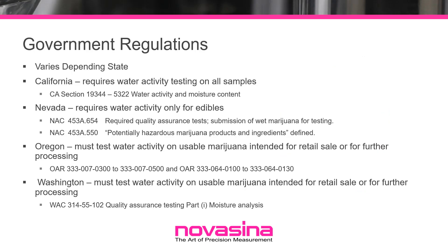Water activity and moisture content are related through the moisture sorption isotherm. Currently, governmental oversight of the production and selling of cannabis is handled on the state level, with the actual state department varying by state. Consequently, regulations vary extensively between states. Water activity currently only appears in the regulations and guidance documents for a few states — those that have had some form of legalized cannabis for the longest time and therefore have the most mature regulations. It is expected that additional states will add water activity testing requirements as markets mature, and if regulations move to the federal level, water activity will be included in any national regulations or guidelines.